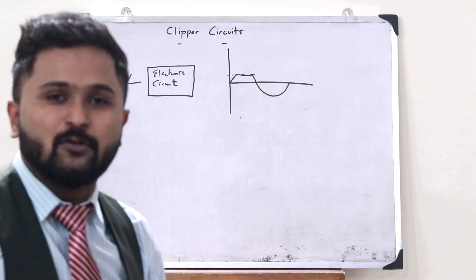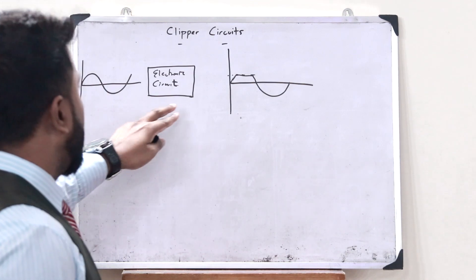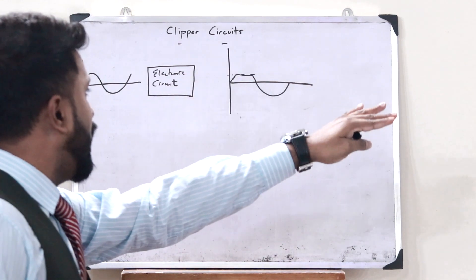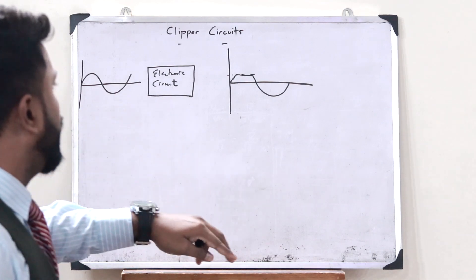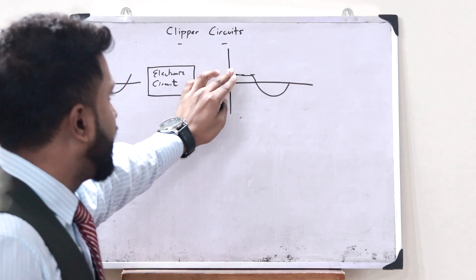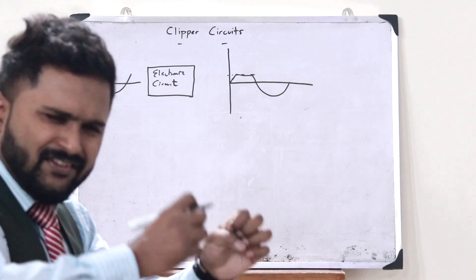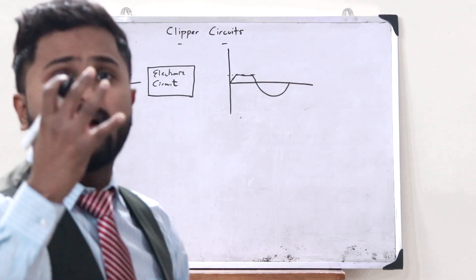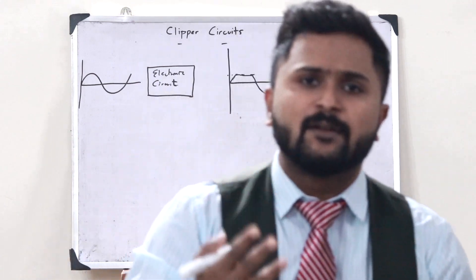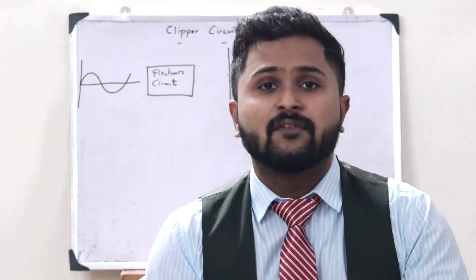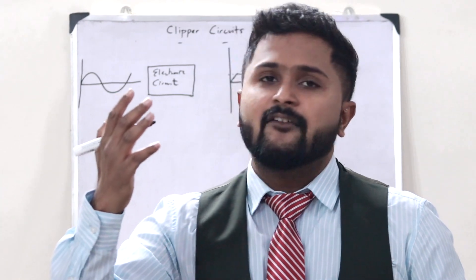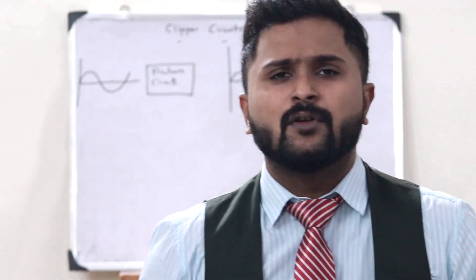A clipper circuit is simply an electronic circuit in which we can prevent the output waveform from exceeding a particular value without distorting or damaging the rest of the original signal. At a particular value, we clip off the input signal, and at the output we get a clipped signal like this. There are mainly three types of clipper circuits: a positive clipper circuit, a negative clipper circuit, and a biased clipper circuit.